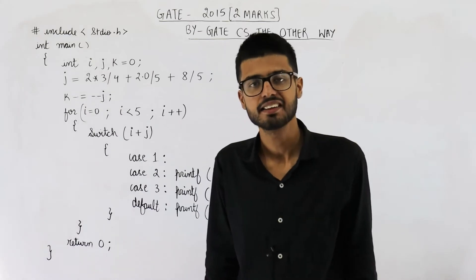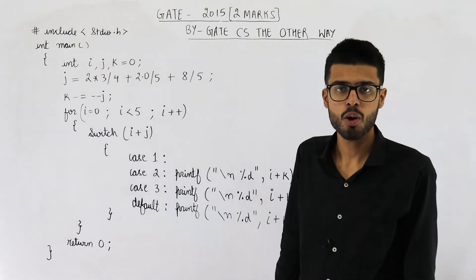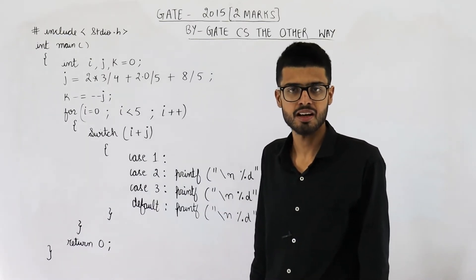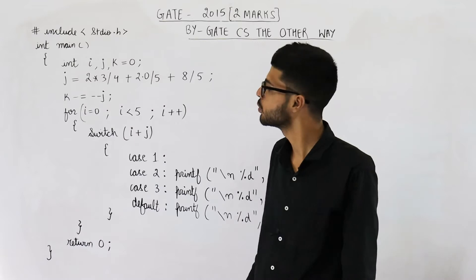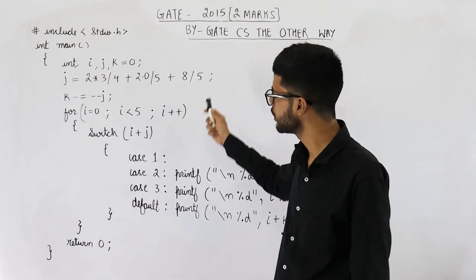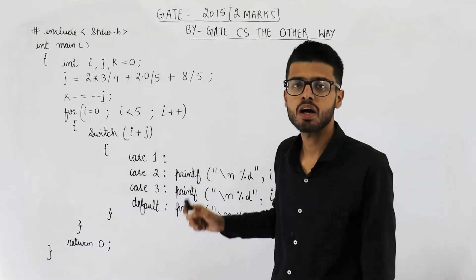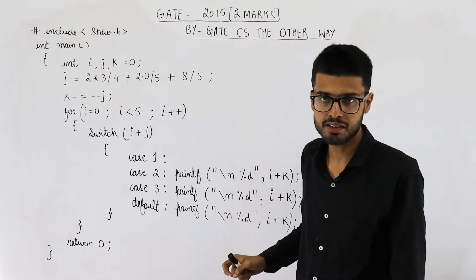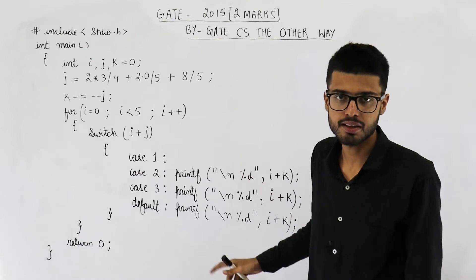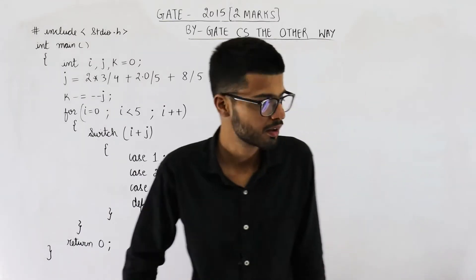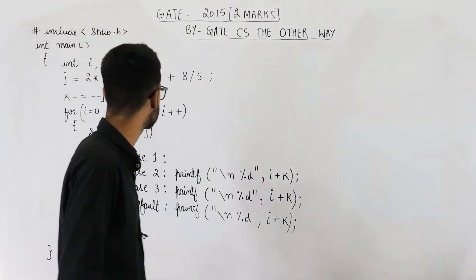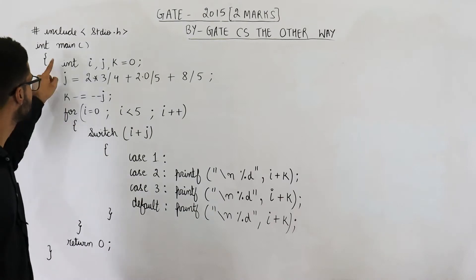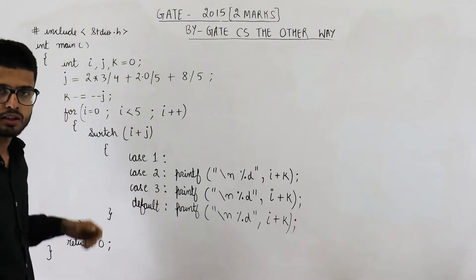Hello everyone, welcome back. This question is from the GATE 2015 exam and it is for two marks. You need to find out how many times the print statement will be executed in this program. Let us start executing it from the first line of the main function.